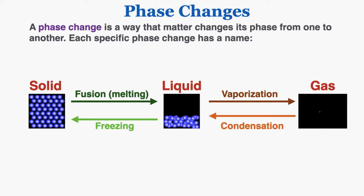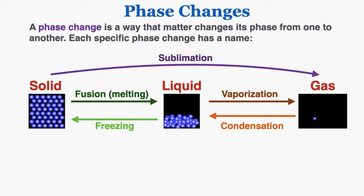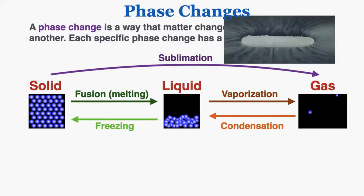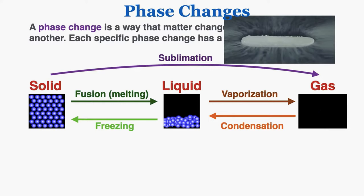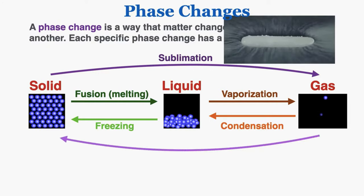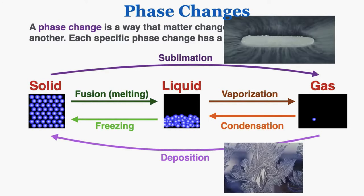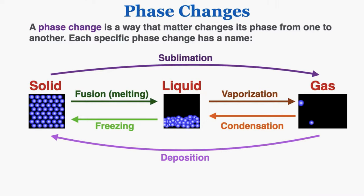It's also possible to go straight from a solid to a gas — we call that sublimation. And it's possible to go from a gas to a solid — we call that deposition. You will need to memorize these six names for the different phase changes.